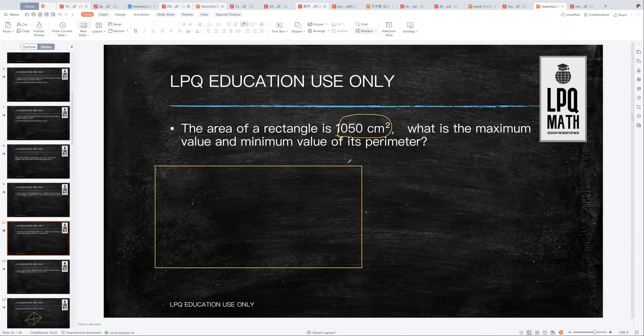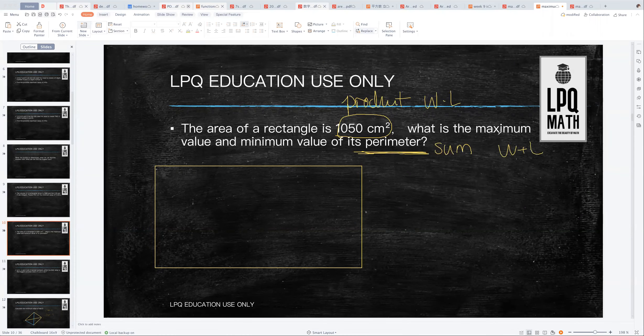The material for making this rectangular garden is actually its perimeter. Perimeter is the sum, and the area is the product, because the area equals width times length. The perimeter equals width plus length times two. So this question turns out to be: we know the product and we want to find out what is the sum's minimum value.